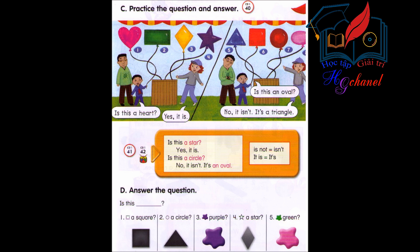Number 1. Is this a heart? Yes, it is. Number 2. Is this a rectangle? Yes, it is. Number 3. Is this a diamond? Yes, it is.